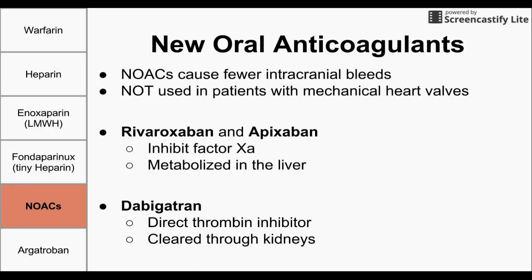Next, we have a class of drugs called new oral anticoagulants, known as NOACs. NOACs are particularly advantageous because they've been shown to cause fewer intracranial bleeds, but one drawback is that you cannot use these drugs with people who have mechanical heart valves — you want to use warfarin or heparin instead. Two of these drugs are rivaroxaban and apixaban, which have an inhibitory effect on factor Xa and are both metabolized in the liver.